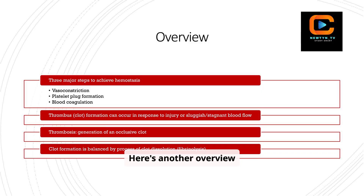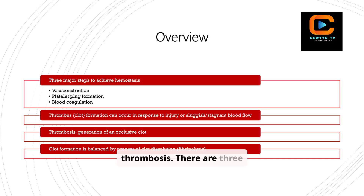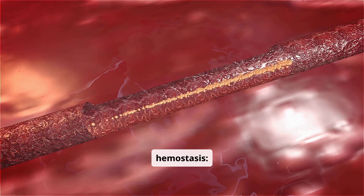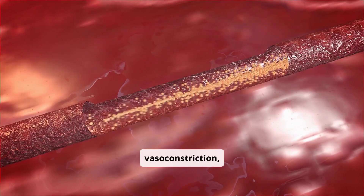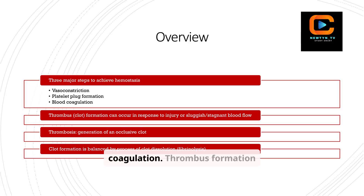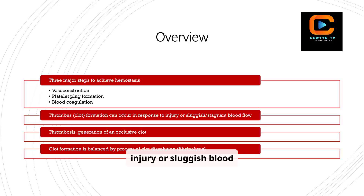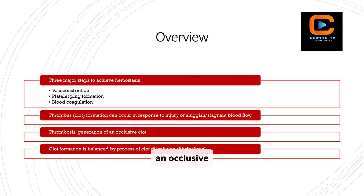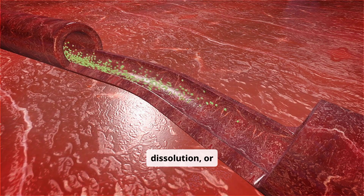Here's another overview slide focusing on the steps involved in hemostasis and thrombosis. There are three major steps to achieve hemostasis: vasoconstriction, platelet plug formation, and blood coagulation. Thrombus formation can occur in response to injury or sluggish blood flow. Thrombosis is the generation of an occlusive clot, and this clot formation is balanced by the process of clot dissolution or fibrinolysis.